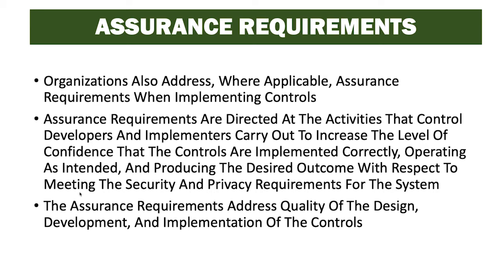Organizations also address, where applicable, the assurance requirements when implementing controls. Assurance requirements are directed at the activities that control developers and implementers carry out to increase the level of confidence that the control is implemented correctly, operating as intended, and producing the desired outcome with respect to meeting the security and privacy requirements for the system. The assurance requirements address quality of design, development, and implementation of the control — ensuring the control is working as designed, implemented correctly, providing the right level of control, and producing correct and reliable output.